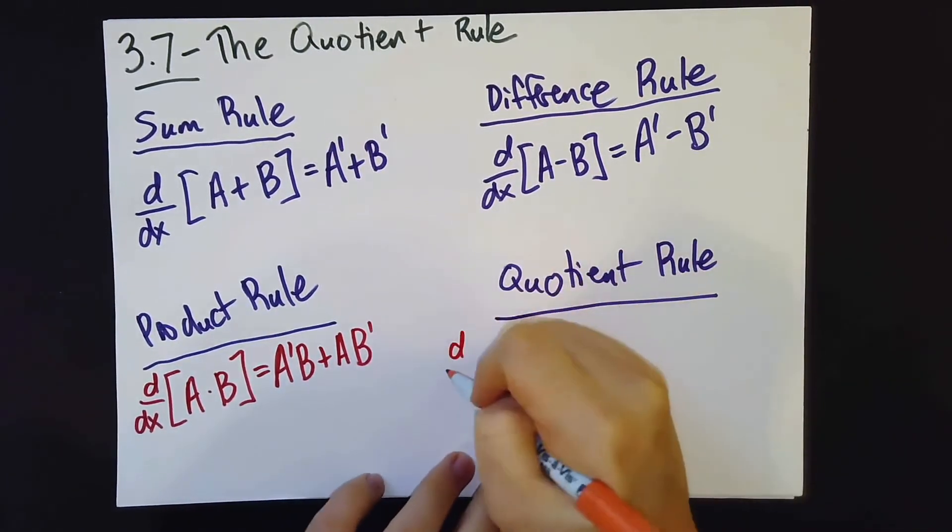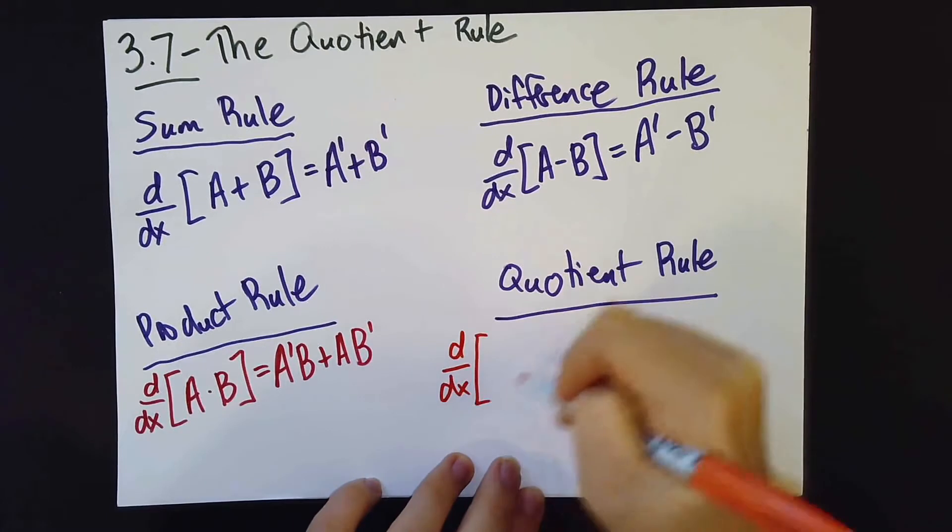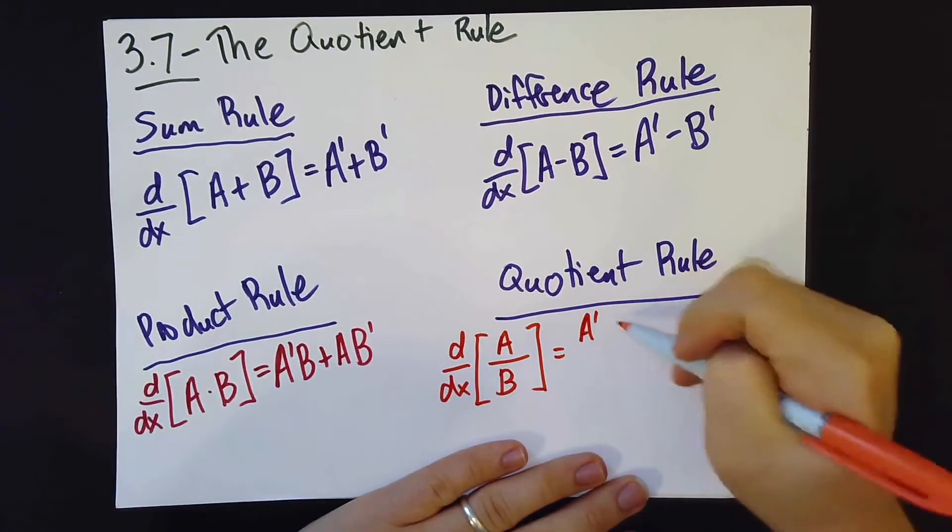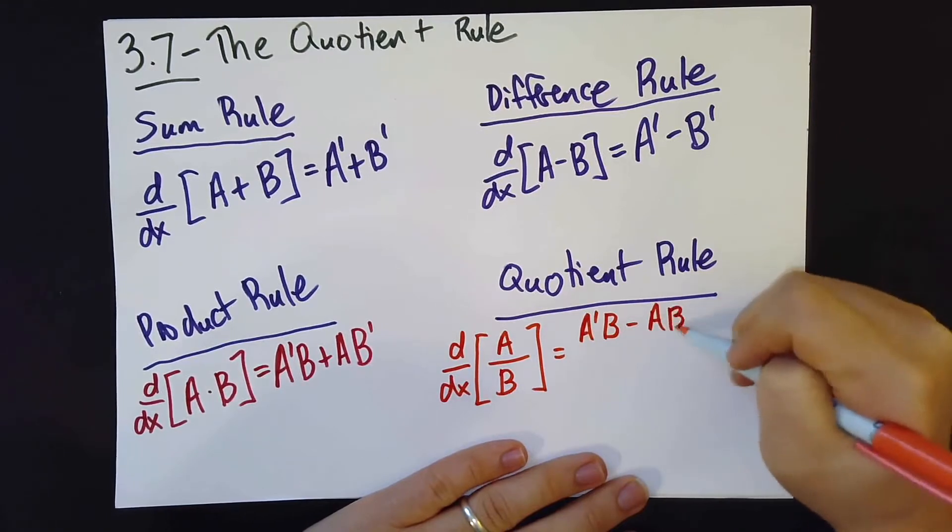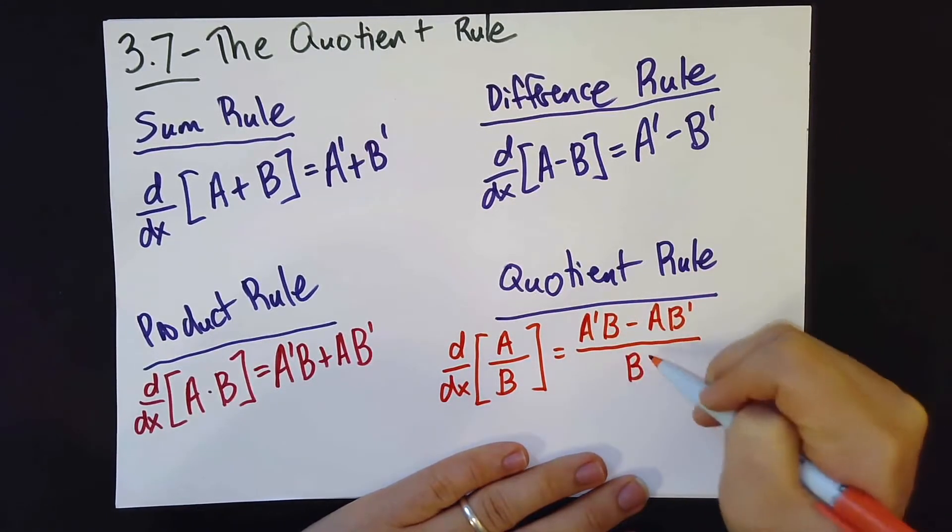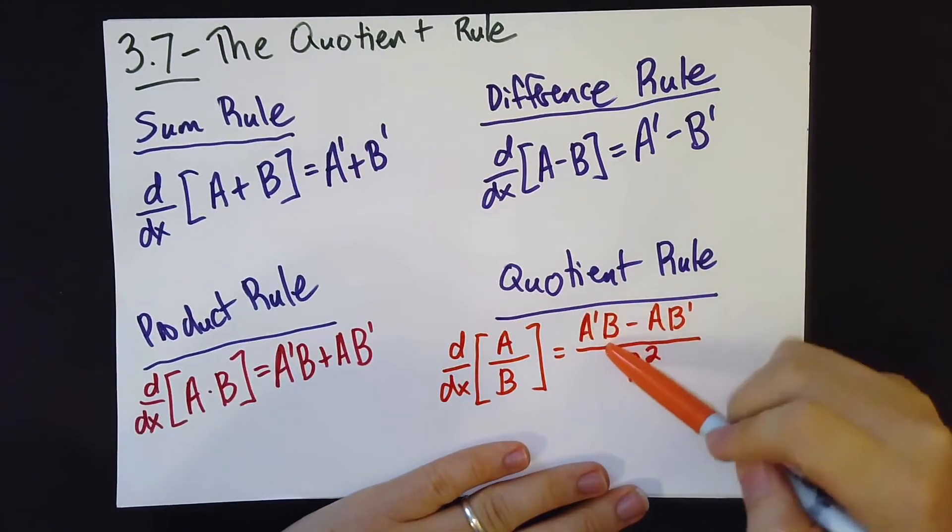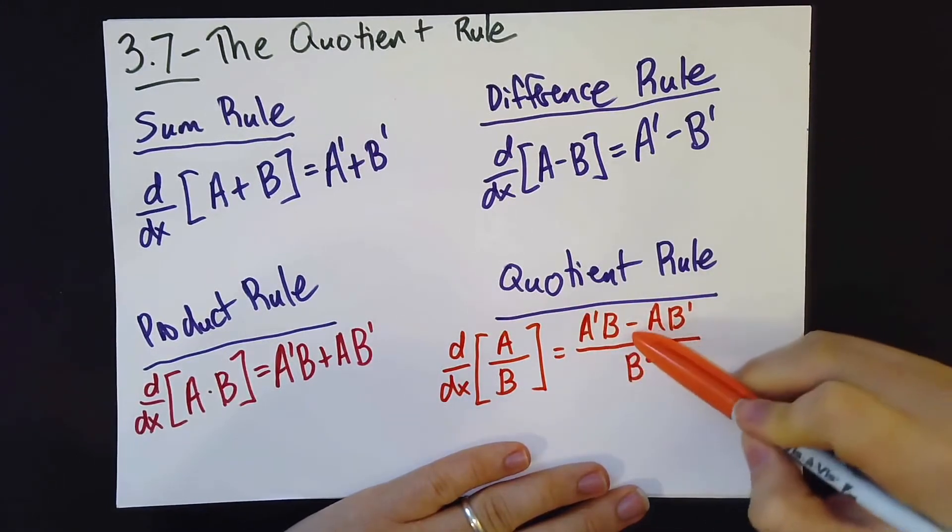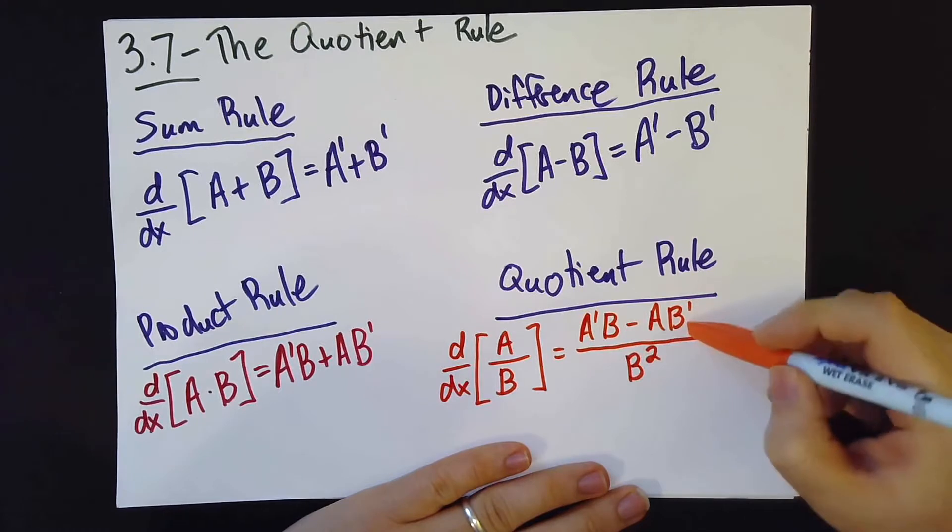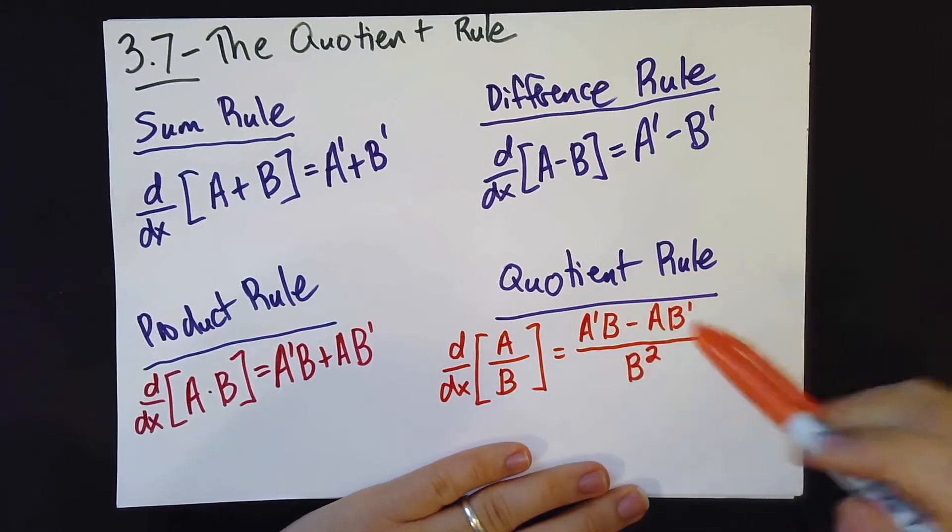So today we're going to finish this quartet by saying what happens when you take the derivative of a quotient. And namely, the thing you get is this. So we get the derivative of a times b minus a times the derivative of b, all divided by b squared.